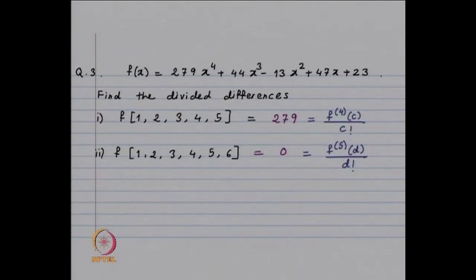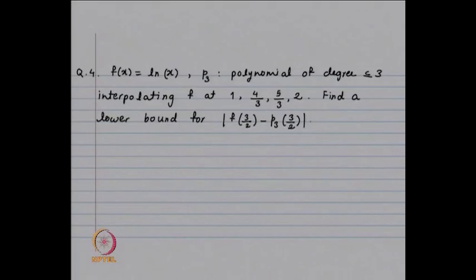You can either use the definition or the formula in terms of the derivative to get the same result. So far we had obtained upper bounds. Now let us look at an example where f(x) = ln(x) and we look at a cubic polynomial of degree ≤ 3 interpolating at 4 points, and we want to find a lower bound.